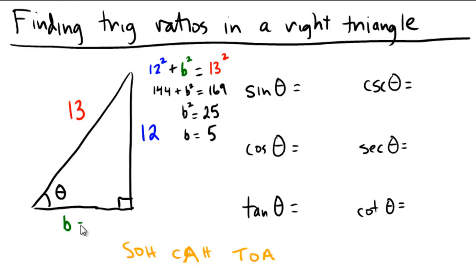And so you can see that B must be 5. So down here I'll label this with a 5. So we have a 5, 12, 13. So as we go into calculating the ratios, I'm going to do all 6 just so we can see where they're all coming from.